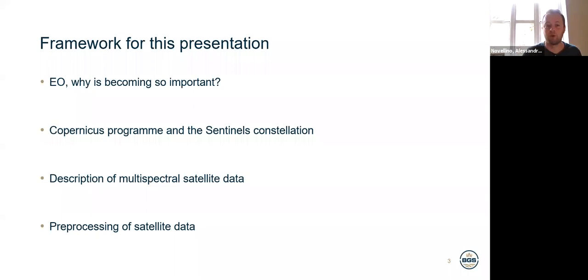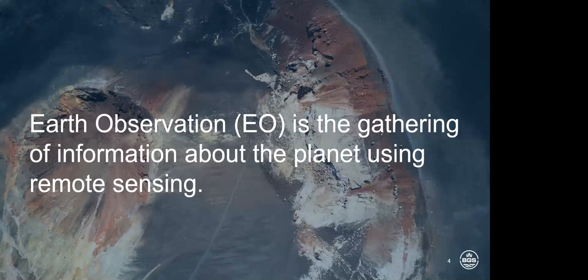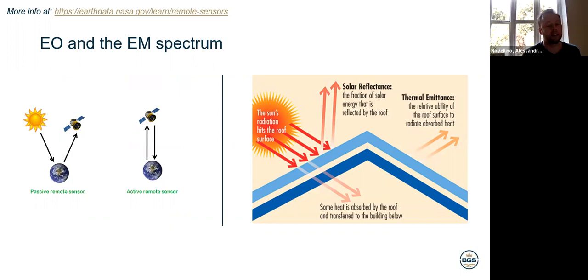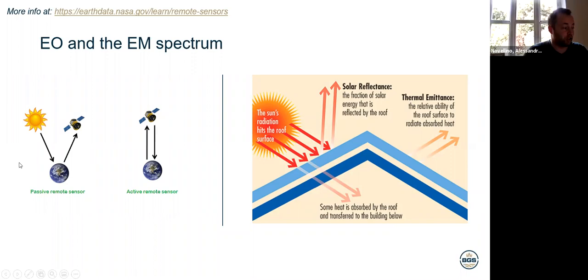Something that regardless of Google Earth Engine, we have to do before any land cover classification. So very broadly, Earth Observation is essentially any type of technique of gathering information from the planet using remote sensing. It cannot be just satellite, but it can be anything else from drones to airborne survey. We have a broad classification into active and passive sensors.